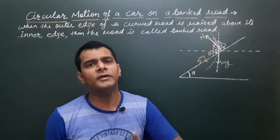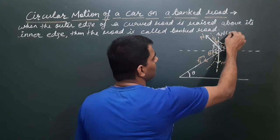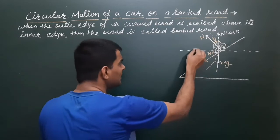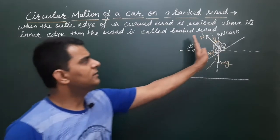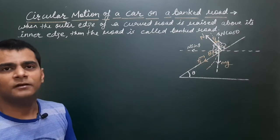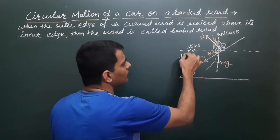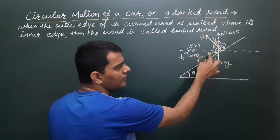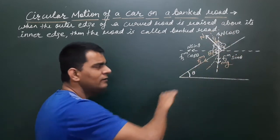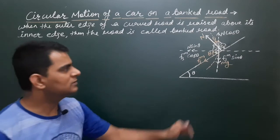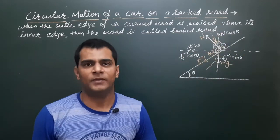Now all forces and all angles are available. We can resolve forces in the vertical and horizontal directions to get components. The component of N in the vertical direction is N cosθ, and in the horizontal direction it is N sinθ. Similarly for fs_max, the components are fs_max cosθ and fs_max sinθ. And mg is already in the vertically downward direction.